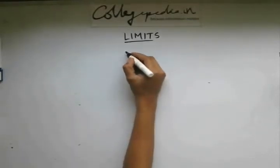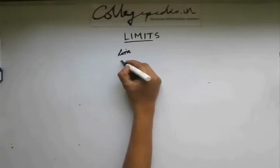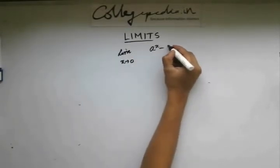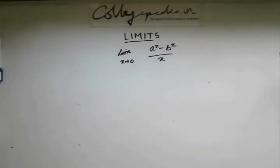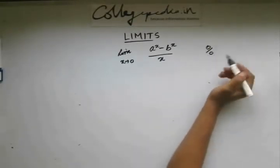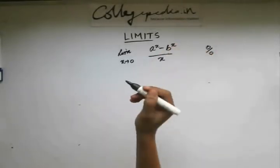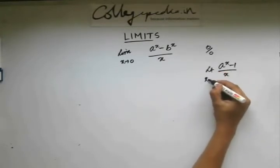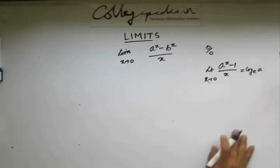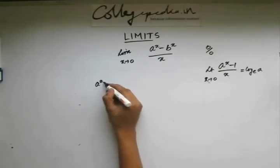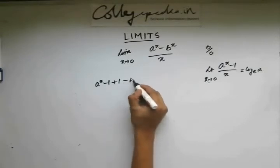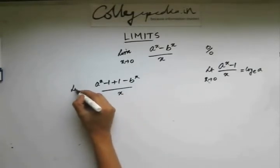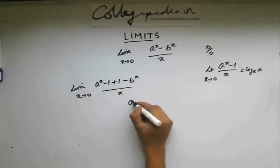The first problem is to evaluate the limit as x approaches 0: a to the power x minus b to the power x by x. If you put 0, it gets of the form 0 by 0. So obviously L'Hospital is valid. That is one method. The second method is to use the standard result. Standard result says I know that a to the power x minus 1 by x, limit x approaches 0, is log a base e. So minus 1 term is missing here. So let's subtract 1 and add 1.